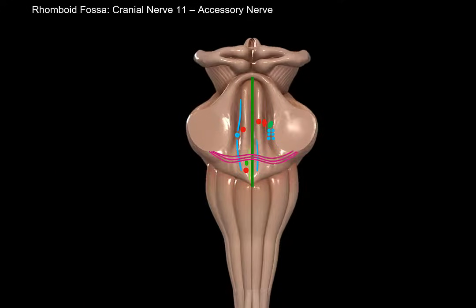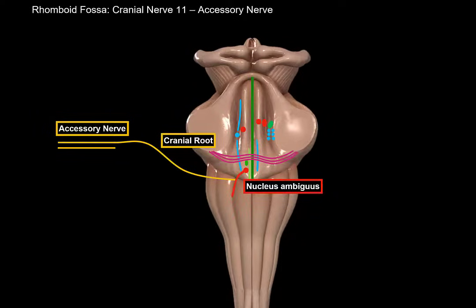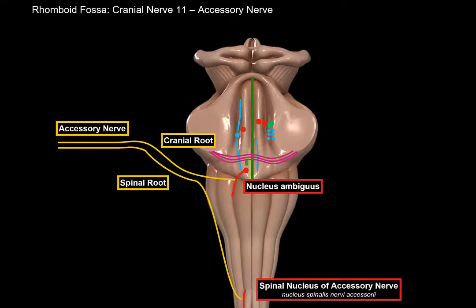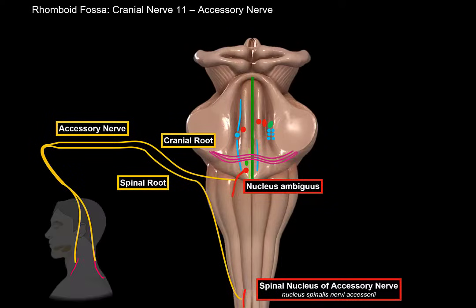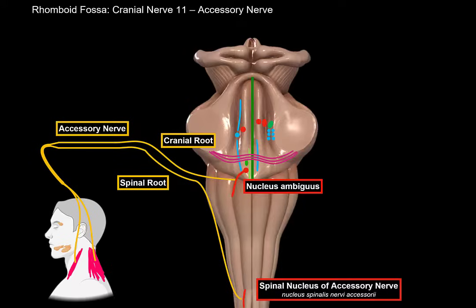Next is the 11th cranial nerve, the accessory nerve. The accessory nerve consists of two motor fibers. The cranial root comes from the part of the nucleus ambiguus located in the posterior lateral sulcus of the medulla oblongata. The spinal root comes from the spinal nucleus of the accessory nerve, appearing on the posterior lateral sulcus of the spinal cord between C1 and C6. It ascends along the spinal cord to enter the cranial cavity through the foramen magnum, joins the cranial root, and forms the accessory nerve. It is primarily a motor nerve innervating the sternocleidomastoid muscle and the trapezius, and is called the accessory nerve because it forms a mixed system with the vagus and glossopharyngeal nerves.